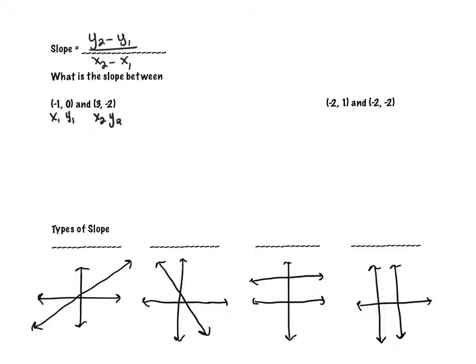So I label my first x and y values and my second x and y values — that subscript just tells us which point each value belongs to. Plugging into the formula: y₂ is negative 2, minus y₁ which is 0, divided by x₂ which is 3, minus x₁ which is negative 1. Negative 2 minus 0 is negative 2. Then 3 minus negative 1 becomes 3 plus 1, giving 4. So the slope is negative 2 over 4, which simplifies to negative one half. Leave slope as a fraction — it's much easier when graphing equations using the rise over run idea.